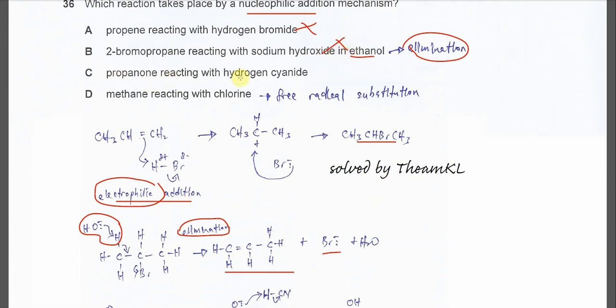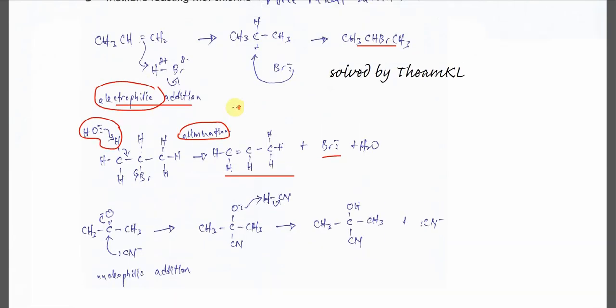For C, propanone reacts with HCN. The HCN, it will react with propanone when it starts with cyanide. So cyanide ion is important. So for the first step, cyanide ion as a nucleophile, it will attack the partial positive carbon.